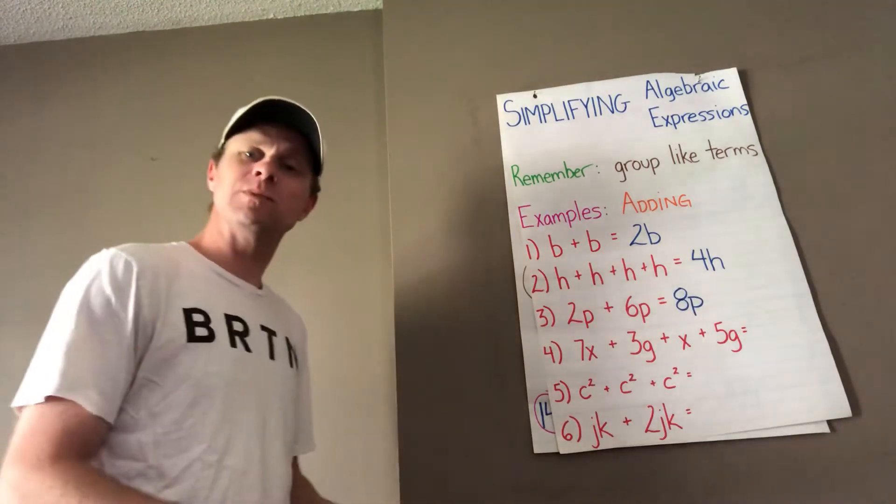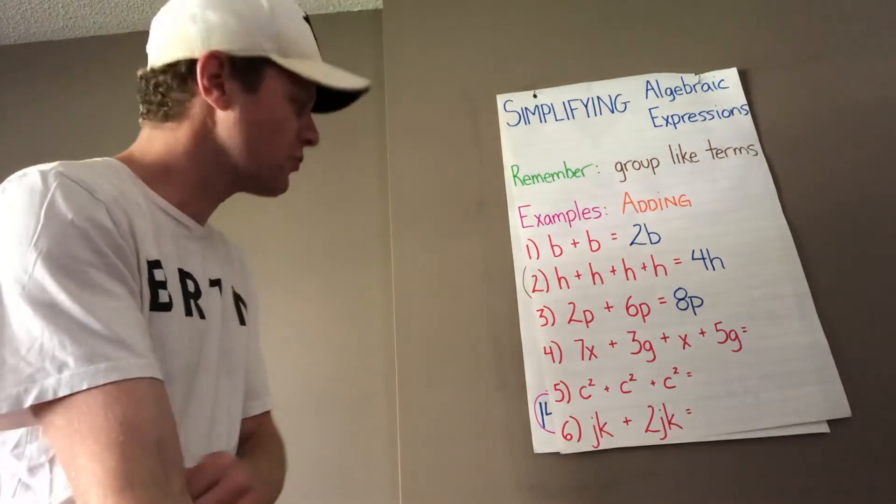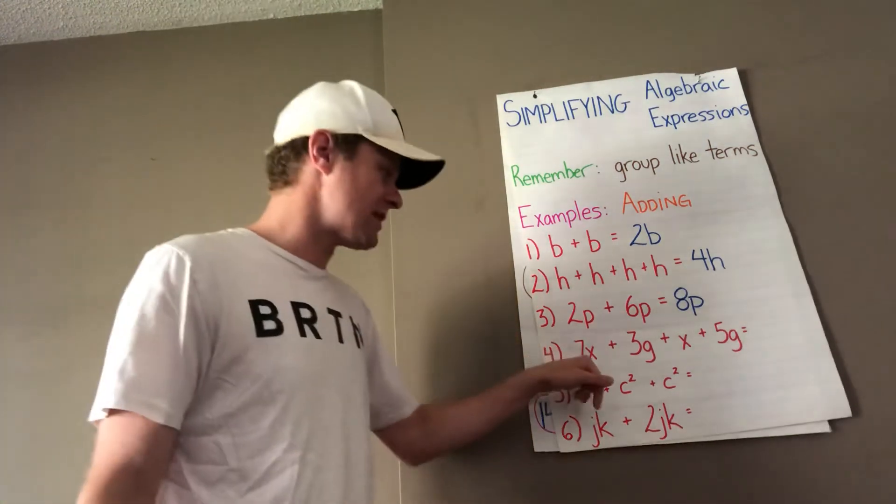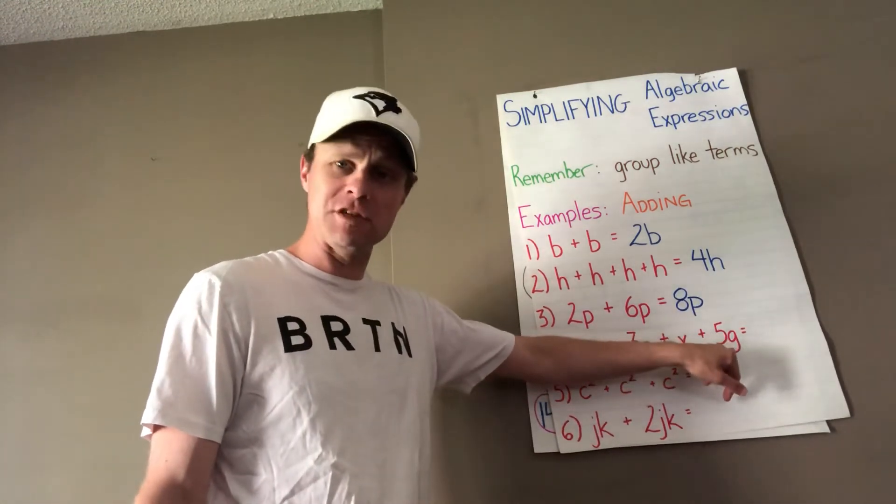Yes, things will get a little more complicated, but if you remember to group your like terms, you should be fine. In this case, we have 7x plus 3g plus x plus 5g.